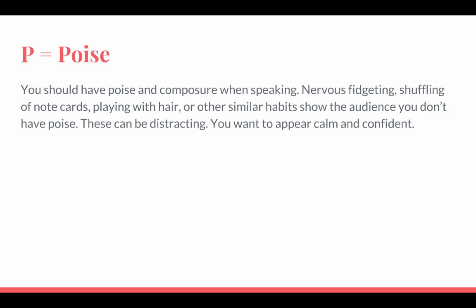The P stands for poise. You should have poise and composure when you give a speech. Things that show that you don't have poise are when you're fidgeting, shuffling your note cards, playing with your hair or your fingers, or other similar habits that show the audience you don't have poise. These can be distracting, so you want to have poise so that you appear to be calm and confident.